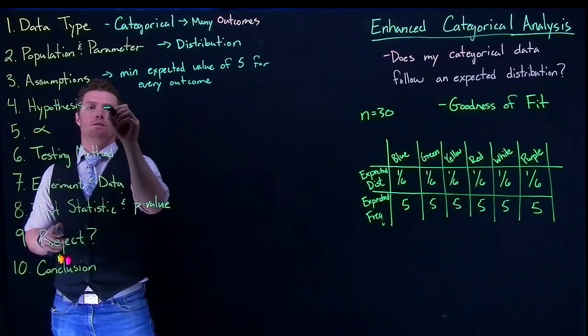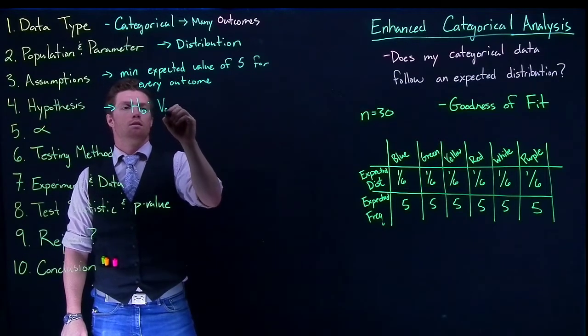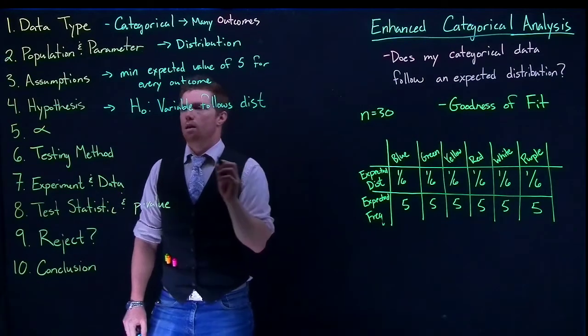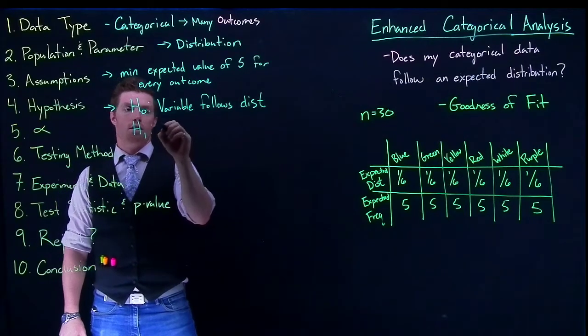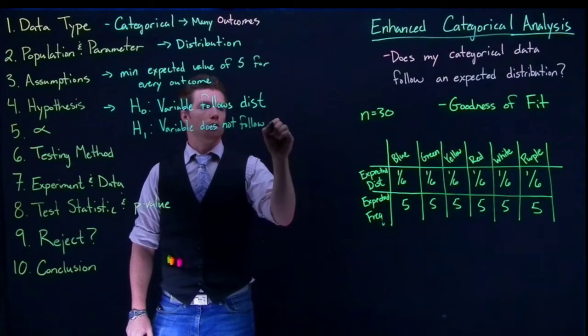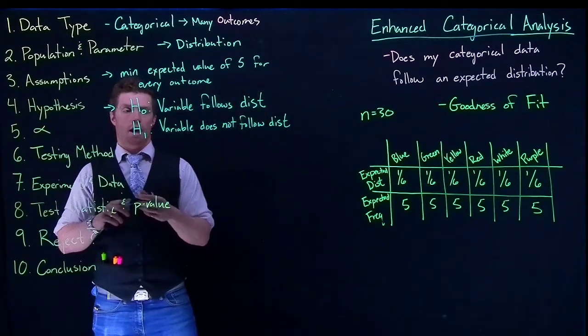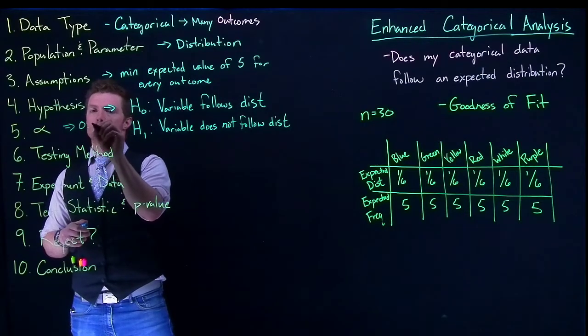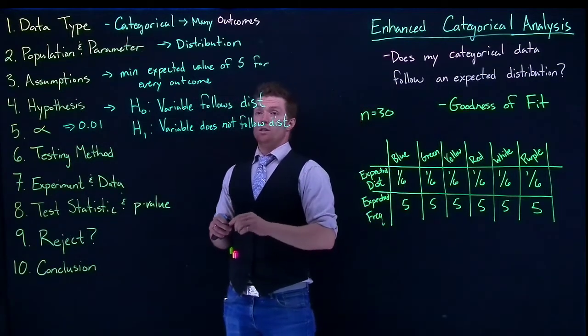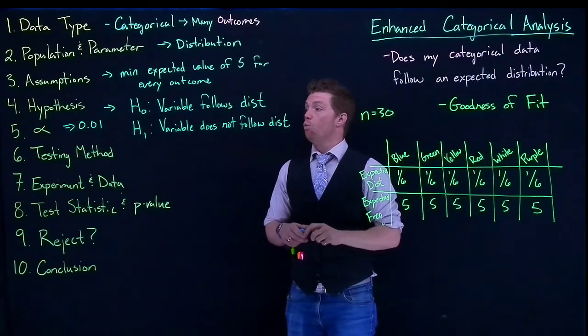And my hypothesis, the null hypothesis, is going to be that the variable follows distribution. And then the alternative is that variable does not follow all of the distribution. And so we can then also establish our alpha. And alpha is the same as always. We can set it up to be 0.01, 0.05, something along those lines. And our alpha is the same thing. It's how often do we want to reject the null hypothesis when the null hypothesis is actually true? How often are we willing to make that type one error?